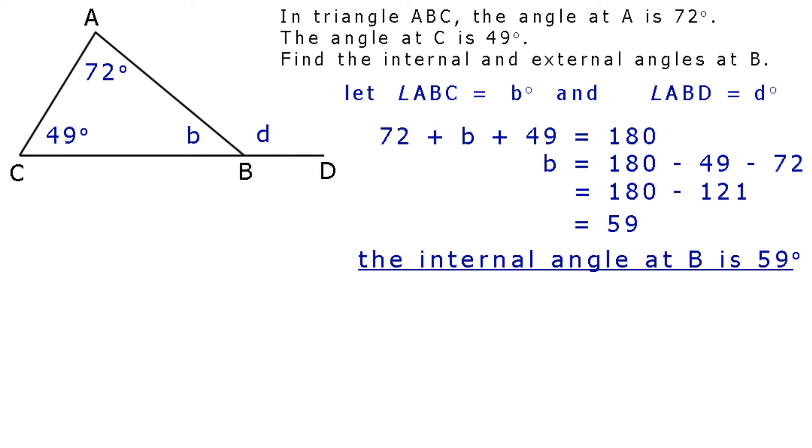And now for the external angle at B. Angle ABC and angle ABD are supplementary. CBD is a straight line. So, B plus D equals 180. Substituting for B equals 59 degrees. 59 plus D equals 180.